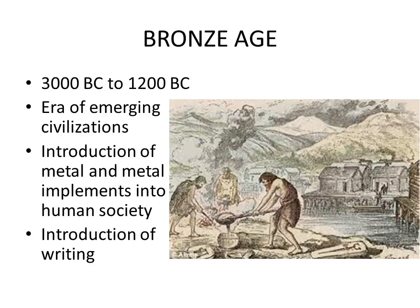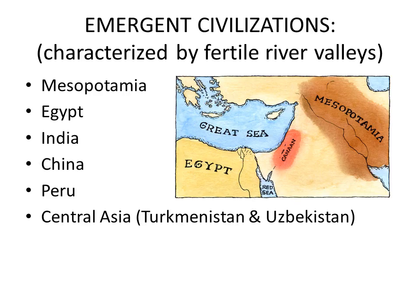We call this the Era of Emerging Civilizations. It was the introduction of metal implements into human society, and it also introduced writing. We have six emergent civilizations that all evolved at the same time: Mesopotamia, which we'll look at in more detail in this lecture; Egypt, which we'll look at next week; and then India, China, Peru, and Central Asia — specifically Turkmenistan and Uzbekistan. But for the purposes of our class, we're going to be looking at Mesopotamia and Egypt.